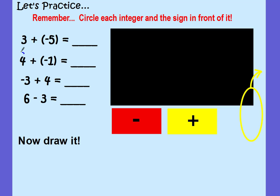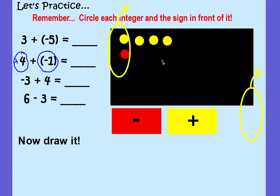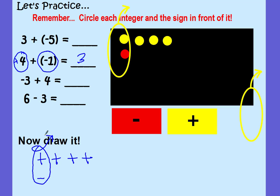Let's try another one: 4 plus negative 1. This 4 has no sign in front of it, so it's positive, plus the negative 1. I'm going to model it with my integer chips first: four positives — that's the yellow chips — and one negative, which is a red chip. We need to pull out our zero pairs. A yellow and a red make a zero pair, and there's only one. I've looped and pulled it out. What do I have left? Three positives. So 4 plus negative 1 equals positive 3. Drawing it: four positives, one negative, pull out your zero pair — you're left with three positives.